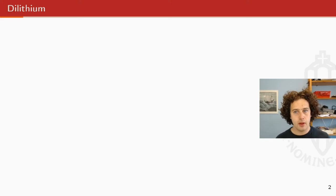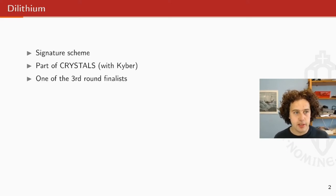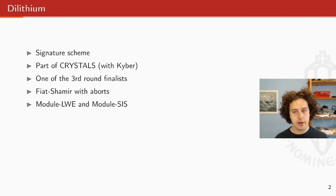So first, the Dilithium Signature Scheme. It's obviously a signature scheme. It's part of the Crystal's submissions together with Kyber, and it's currently progressed to the third round of the NIST competition. The idea of the scheme is that it's a Fiat Shamir with abort scheme. It looks a lot like a general Fiat Shamir scheme, but sometimes it can occur that the signature is incorrect and it could leak something about the secret key. In these cases, we check whether the signature is correct. And if the signature is incorrect, we restart the Fiat Shamir loop and we call one of these cases an abort. At some point, we will end up with a good signature.